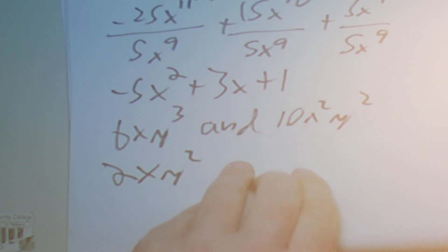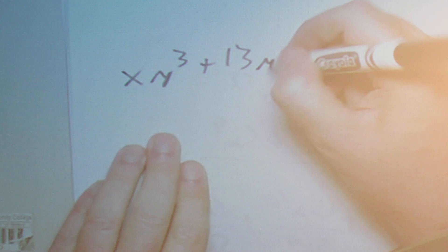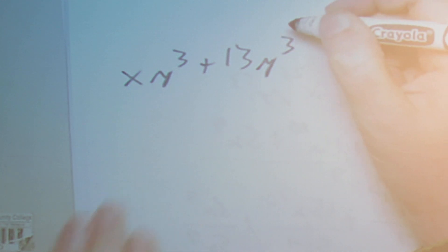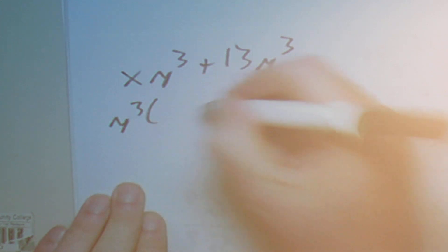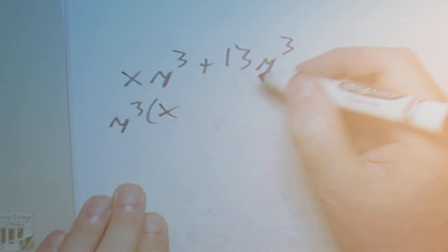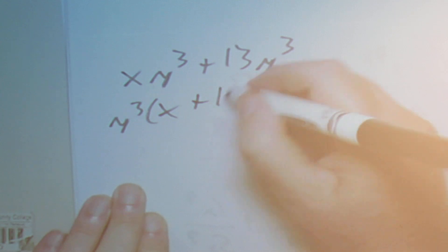Next we're going to factor the greatest common factor from a binomial. We have xy to the 3 plus 13y to the 3. We can factor out y to the 3, and we're left with y to the 3 times the quantity x plus 13.